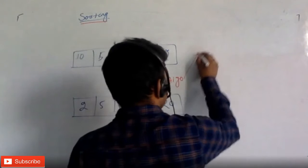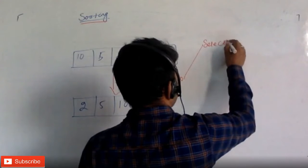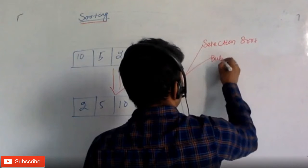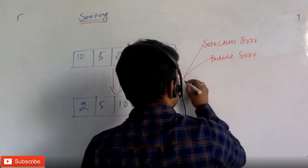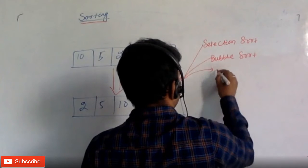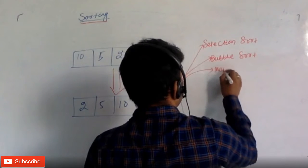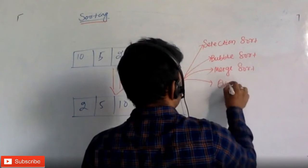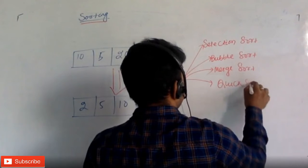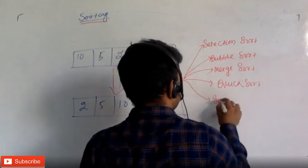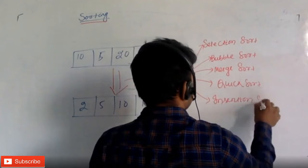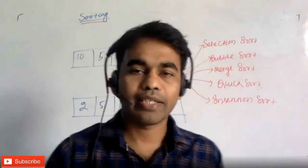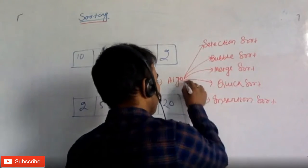There are different sorting algorithms. Selection sort is one of the basic sorts. Then there is bubble sort. Then there are different sorts — merge sort, quick sort, insertion sort. Apart from that, there are also other kinds of sorting algorithms like heap sort.